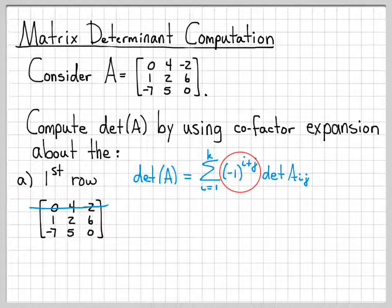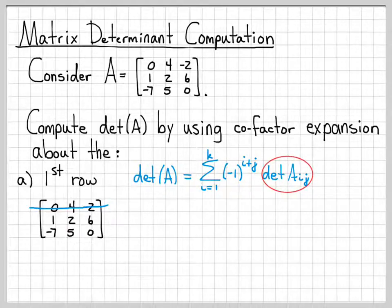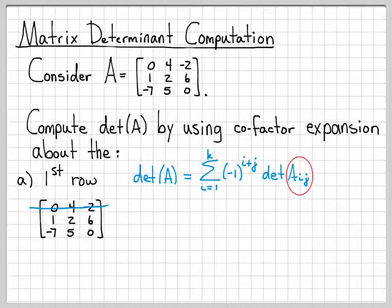Each term has a sign given by negative one raised to i plus j. If i plus j is even, that's negative one raised to an even power, which is positive. If i plus j is odd, that's negative one raised to an odd power, which equals negative one. So the sign toggles back and forth, multiplying the determinant of the submatrix A sub i,j — the matrix formed by removing the i-th row and j-th column from A.